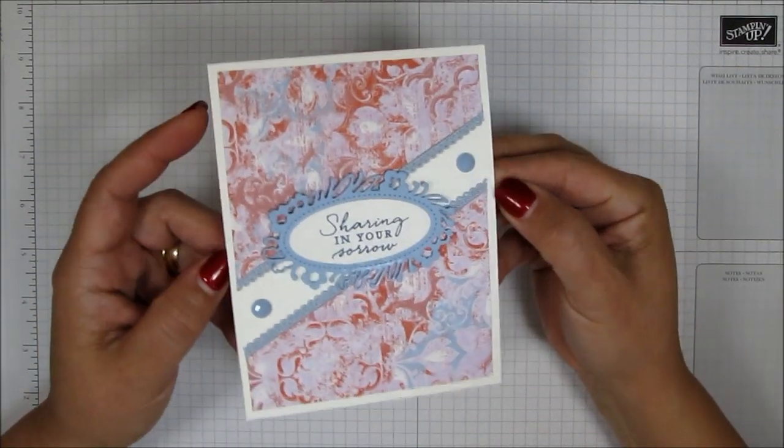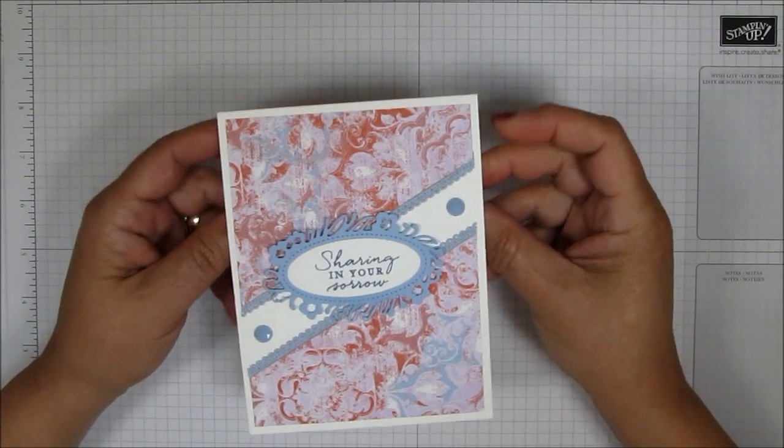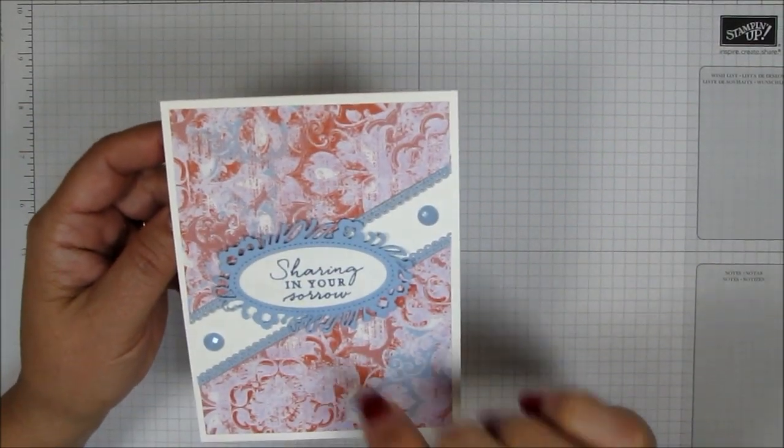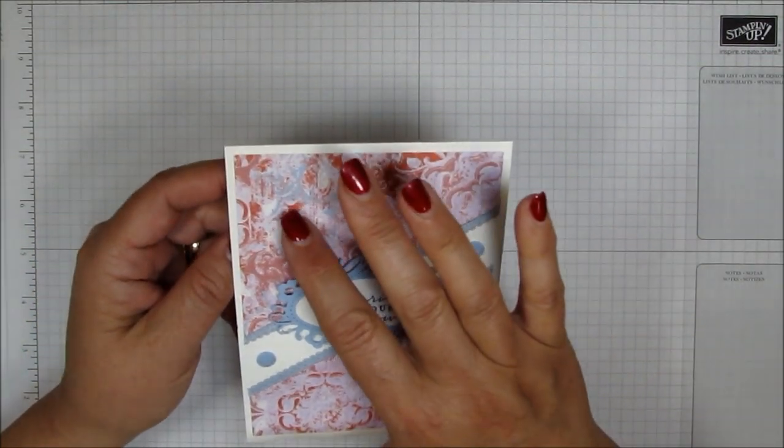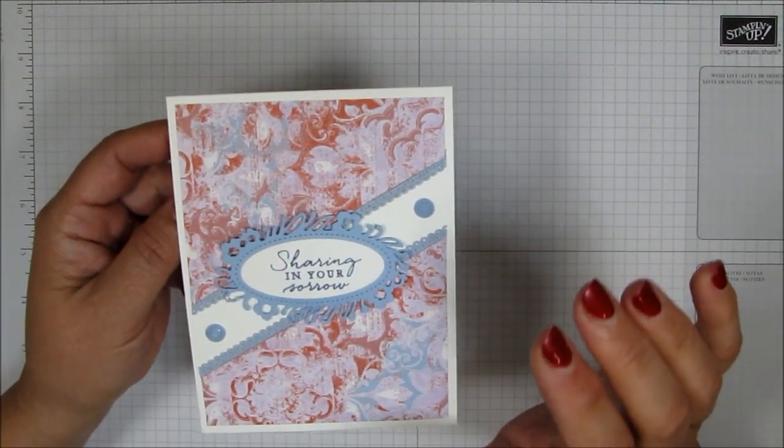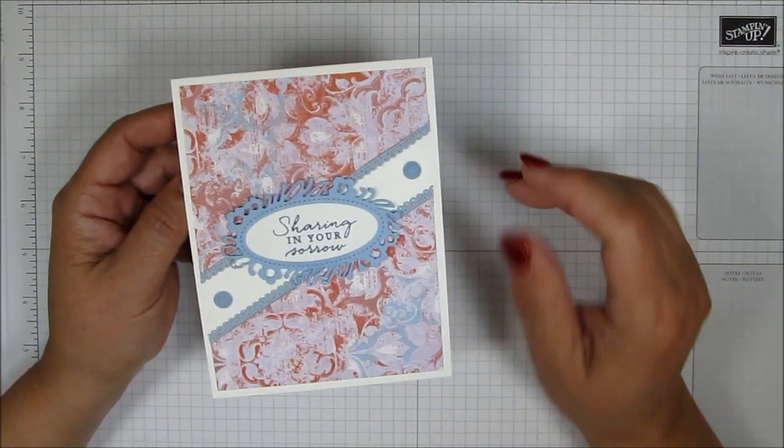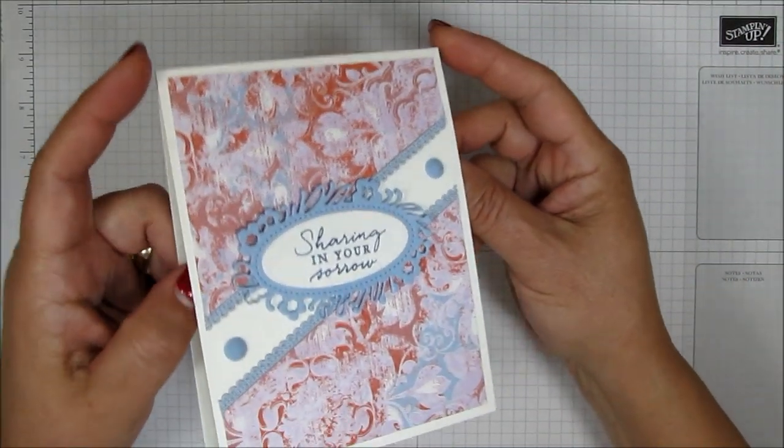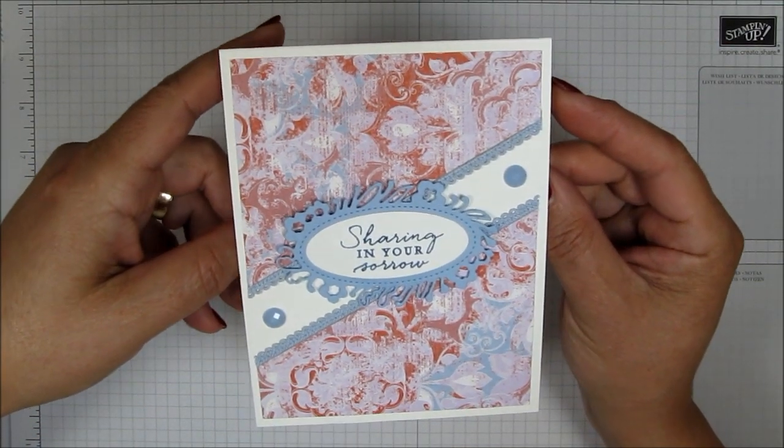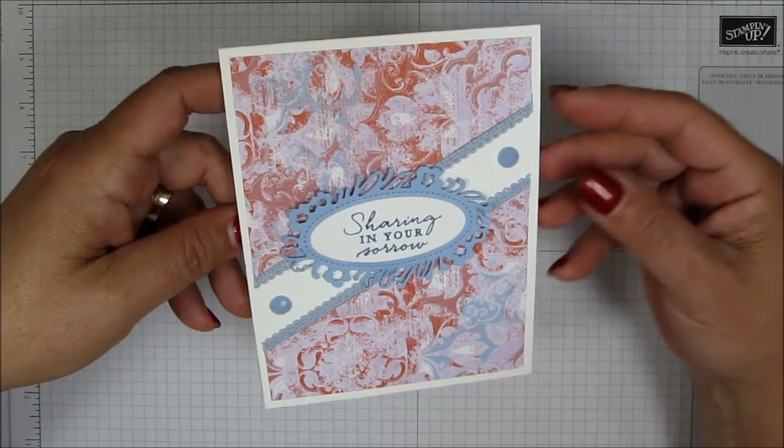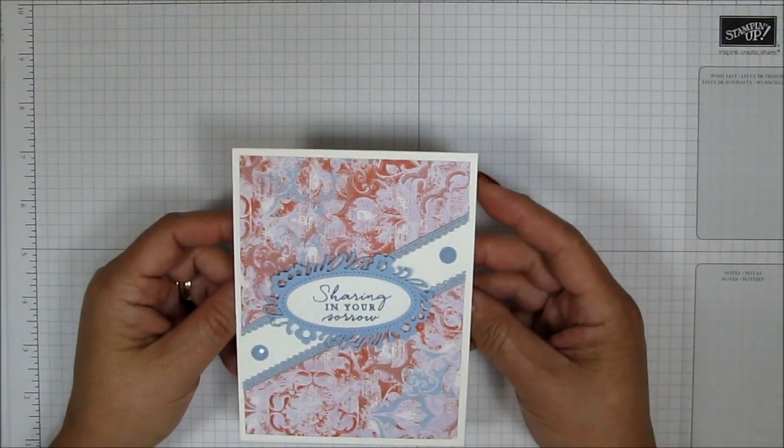This unfortunately is a sympathy card. Sometimes we have to make them or buy them, but this time I'm making this card using some ribbon, some designer series paper from the woven threads. It doesn't have a whole lot of bling on it, but I think that it's really pretty, the colors and everything. So I'm going to show you how I did this and if you want to learn, just keep watching.